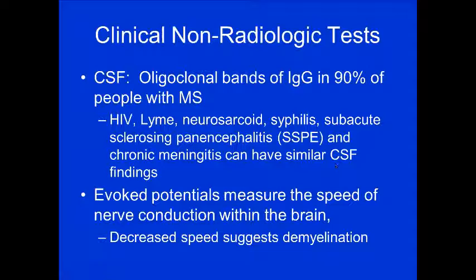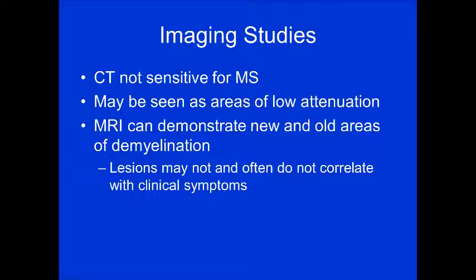Clinical non-radiological tests: you can examine the CSF and look for oligoclonal bands of IgG, found in 90% of patients with MS. However, patients with HIV, Lyme disease, sarcoidosis, syphilis, SSPE, or chronic meningitis can have a similar CSF finding, so it's not the most specific test. Evoked potentials measure the speed of nerve conduction — since MS involves demyelination, you'll see decreased speed, suggesting demyelination.